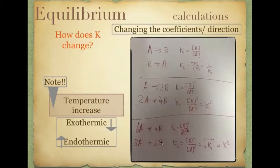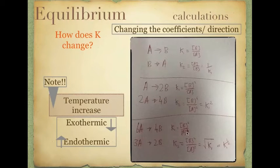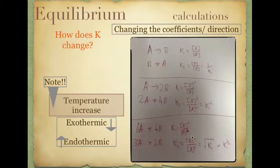If you halve your coefficients — for example, 6A makes 4B becomes 3A goes to 2B — your powers divide by 2, meaning you are square rooting your K value. So with B to the power of 4 over A to the power of 6, halving those values gives B squared over A cubed, which is the square root of the original K value.